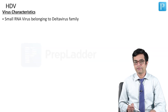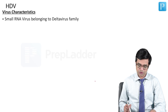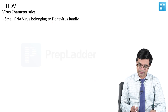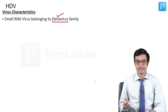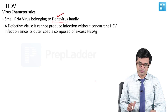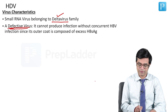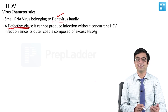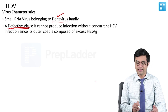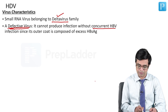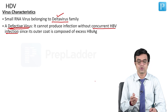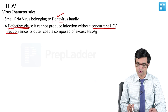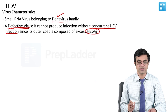HDV is a small RNA virus which belongs to the delta virus family. D for delta, D for defective. This is a defective virus. Why defective? Because it cannot cause infection by alone, by itself. It needs concurrent HBV infection because its outer coat is composed of HBsAg antigen.